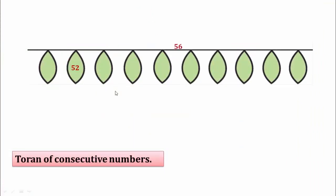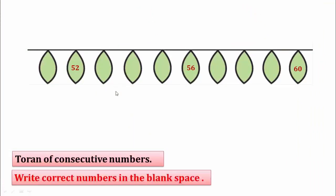Here 52, 56 and 60 are given. Write correct numbers in the blank space. Students, we learned 51 to 60. We have to write the correct number in this blank space. Before 52 there is 51, then 52. After 52 there is 53, then 54, after that 55. 56 is given, then 57, 58 and after that 59, then 60. Good, we complete the toron of consecutive numbers.